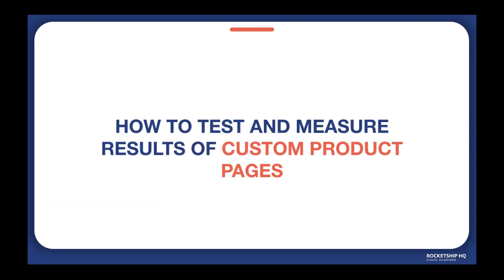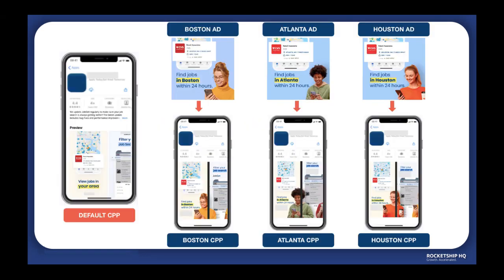What are the types of tests you can run with CPP and how can you measure the results? We can target specific audiences such as age, gender, and ethnicity, geographical locations by launching country or city-specific pages, and promote different services or products based on seasonality.